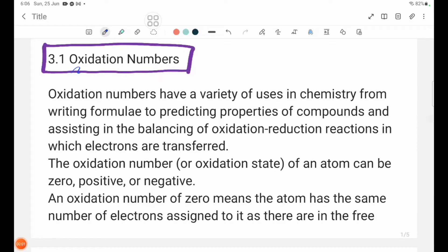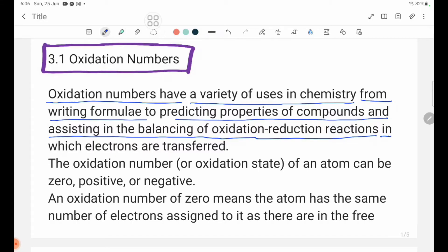Section 3.1 Oxidation Numbers. Oxidation numbers have a variety of uses in chemistry, from writing formulas to predicting properties of compounds and assisting in the balancing of oxidation-reduction reactions in which electrons are transferred.